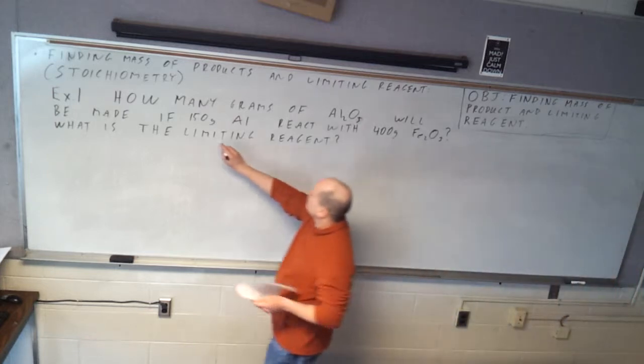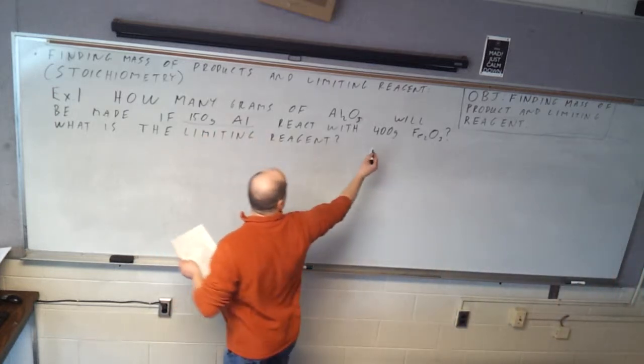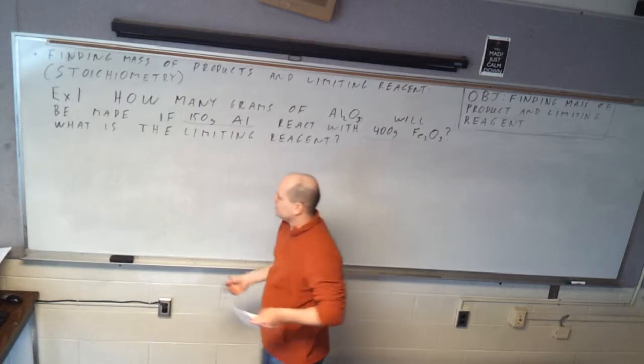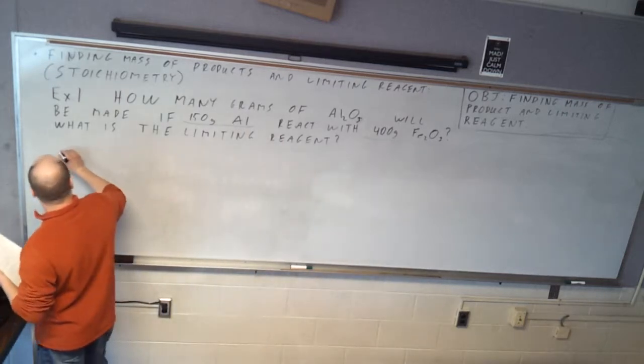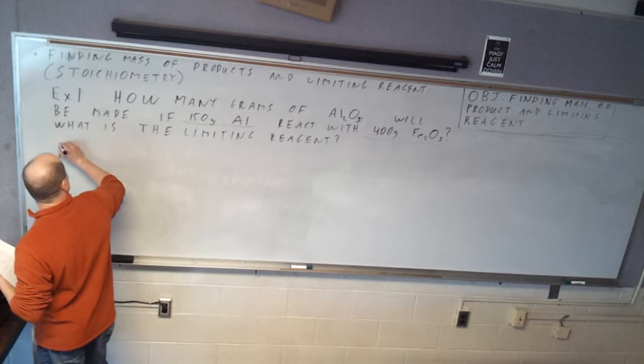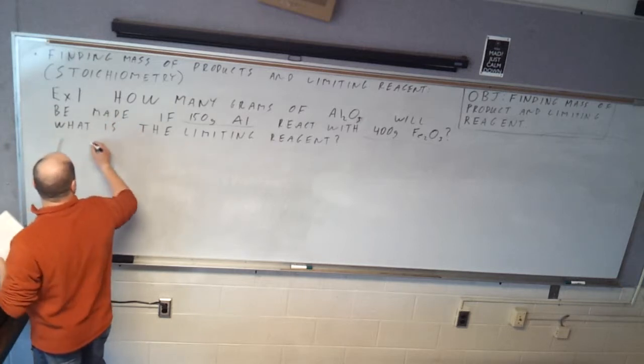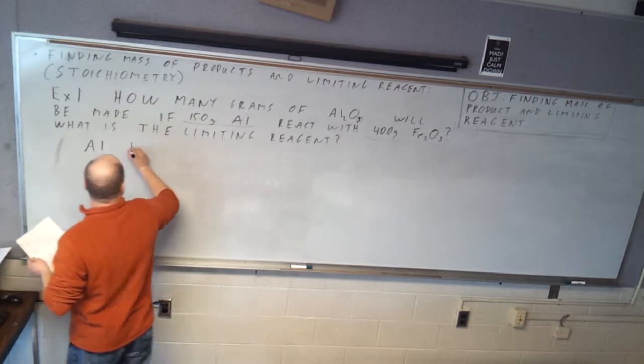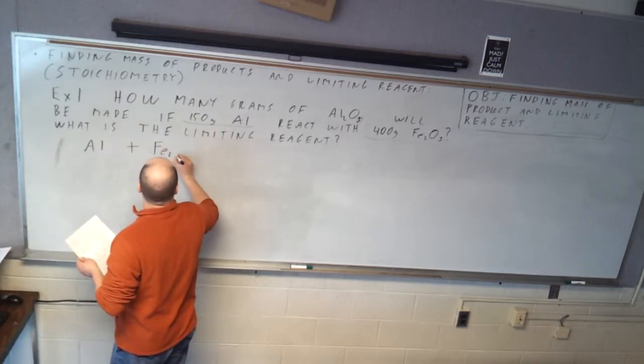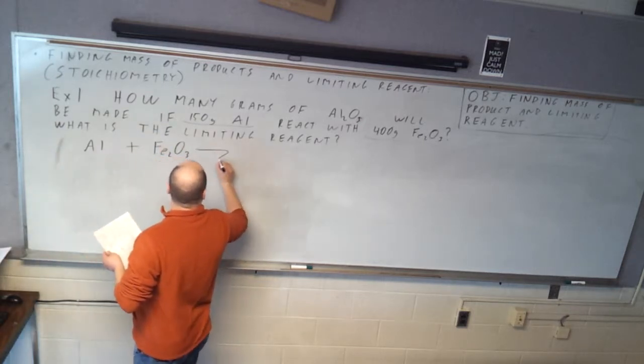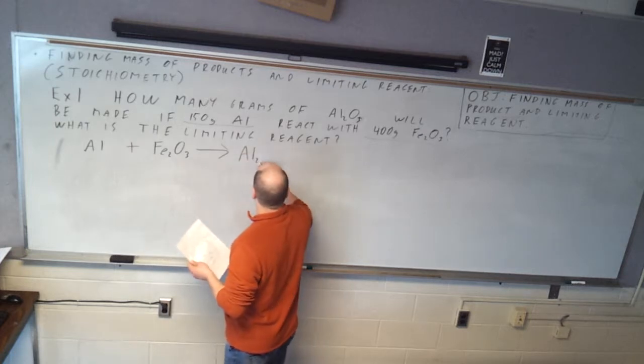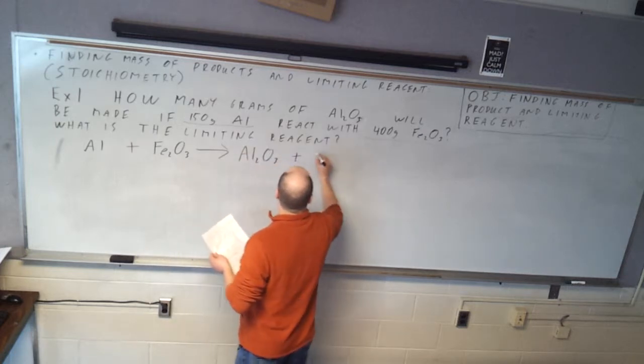Okay, so the first step is we're going to take these two things, aluminum and iron oxide, and we're going to find the number of moles. Oh wait, I should write the reaction first. Let's do that. Alright, so the reaction looks like this: aluminum plus iron(III) oxide reacts to form aluminum oxide and iron metal.